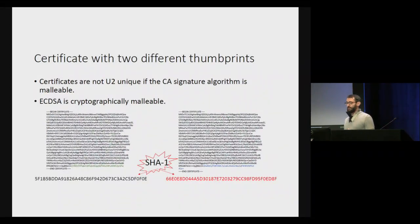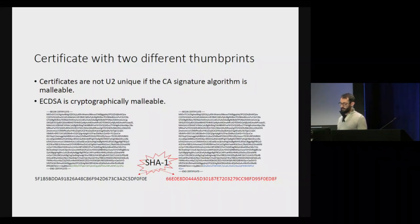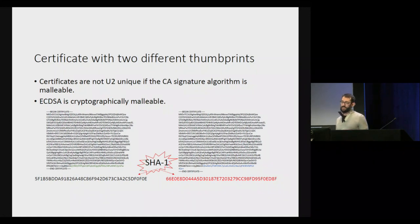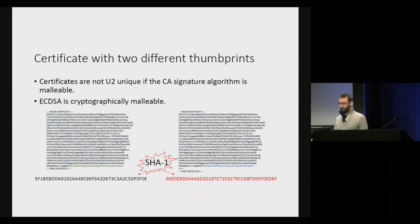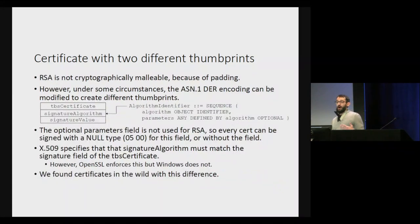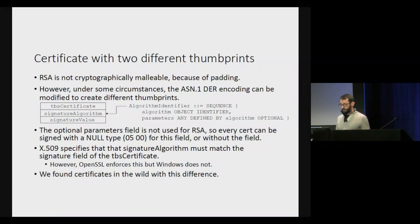To demonstrate how we can break the U2 property, here is the PEM for a certificate that has two different thumbprints. This is because ECDSA is cryptographically malleable — you just re-sign, generating a new blinding value, and you'll have two different thumbprints. RSA is not cryptographically malleable because of padding, but the ASN.1 DER encoding can be mangled to create different thumbprints.